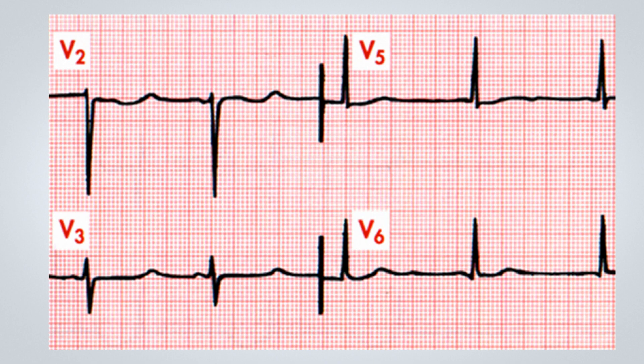You should pause the video to review the tracings before we discuss. In this ECG, we only have some precordial leads, namely V2, V3, V5, and V6. At first glance, there appears to be a sinus rhythm with each QRS complex present. The PR interval seems normal and I cannot identify any notable changes related to the QRS complex itself. When we observe the ventricular repolarization, we can see that the QT interval — which spans from the start of the QRS complex to the end of the T wave — is substantially prolonged. If we were to measure this interval, we have about 18 millimeters, which would equate to 720 milliseconds or 0.72 seconds.